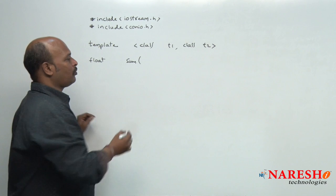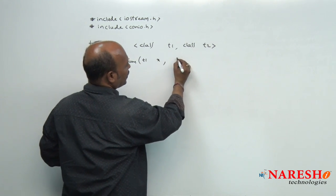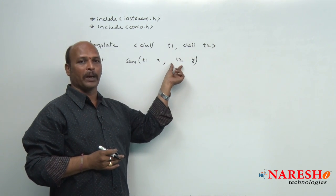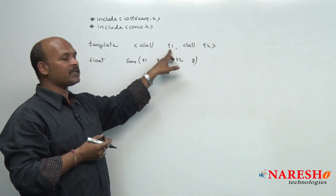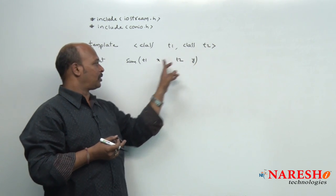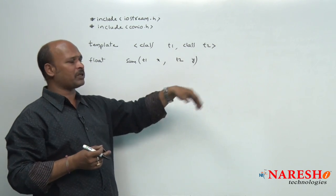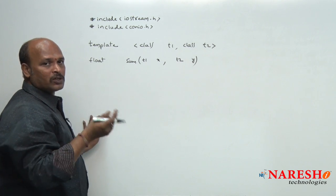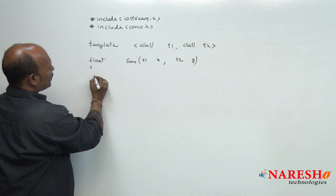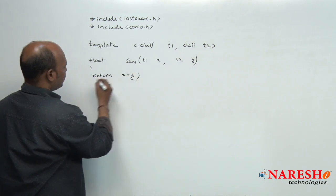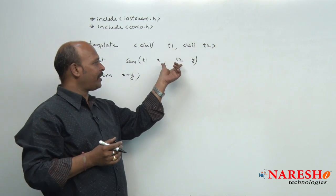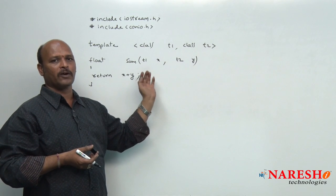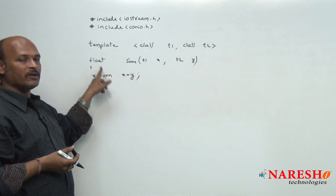The function takes two arguments: T1 x and T2 y. So x becomes T1 type and y becomes T2 type. If the user sends integer and float, x becomes integer and y becomes float. If both integers or both floats are sent, x and y both become that type — no problem. Then simply return x plus y. The answer is returned as float, which covers the case of sending integer-float or float-integer.